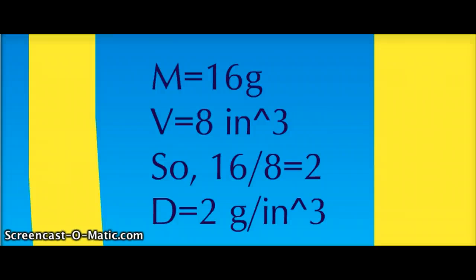Example number 1. If the mass of an object is 16 grams and the volume is 18 inches cubed, the density is 2 grams per inch cubed.